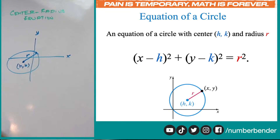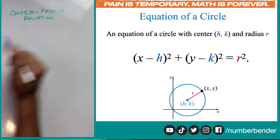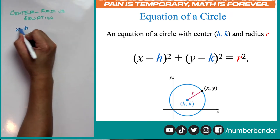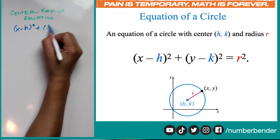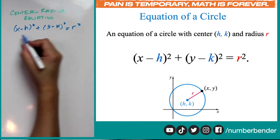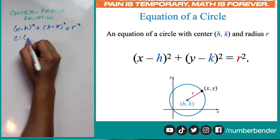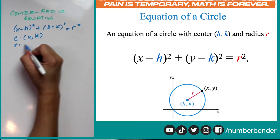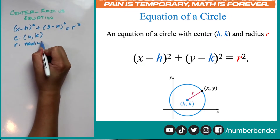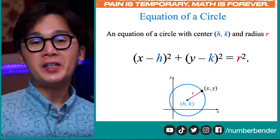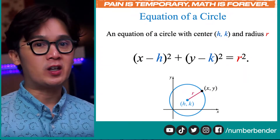These are the two elements that we need to write the equation of our circle. So let's write that equation: x minus h quantity squared plus y minus k quantity squared is equal to r squared, where the center is at h and k and r is our radius. Let's start working on a problem that will help us use this equation to write the equation of a particular circle.